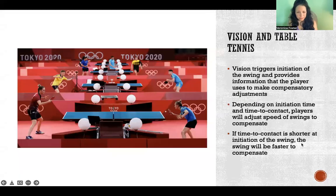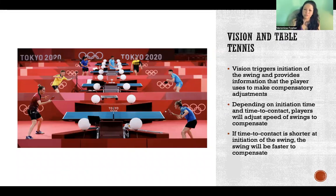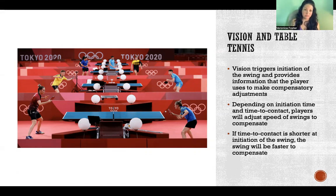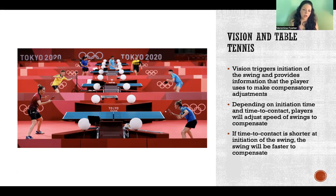Table tennis operates a little bit differently — it's another example of making contact with a moving object. Unlike baseball, where swing time is very static and the same from trial to trial, in table tennis the speed of the swing changes to compensate depending on time to contact. Vision triggers the initiation of the swing and provides information that the player uses to compensate, especially with speed of the swing.